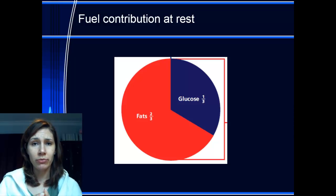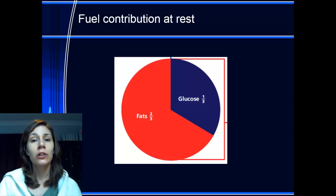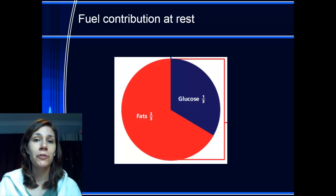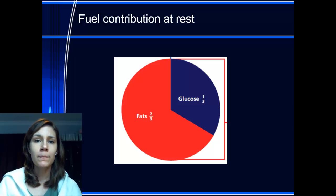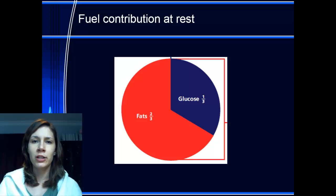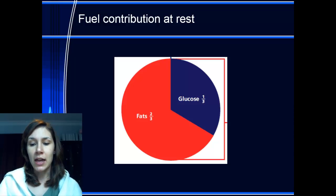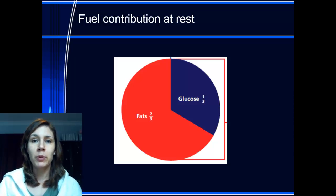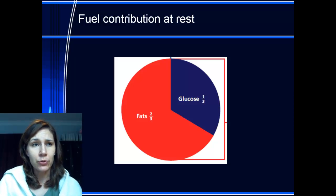Fuel contribution at rest means what your body defaults to when using chemical fuels for cellular processes. You're not exercising, so there's not a great demand for oxygen, and your body can afford to use fats — about two-thirds fat to one-third carbs. This doesn't mean you'll lose weight sitting down; it just means that for basic processes like thinking and postural support, fats are utilized. Glucose is spared or saved for exercise.